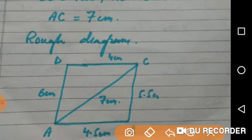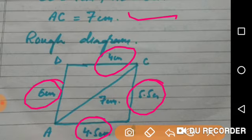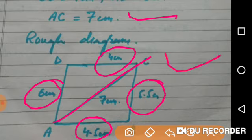In which I will write the sides which are given in my question. That is AB is 4.5 cm, BC is 5.5 cm, CD is 4 cm, AD is 6 cm, and AC is 7 cm. So this will be our guiding diagram to draw the actual figure of a quadrilateral.